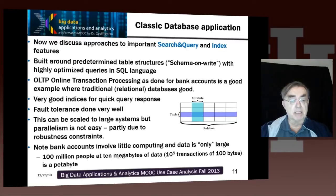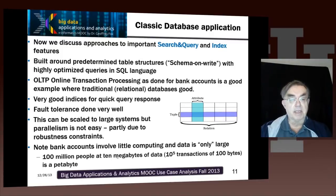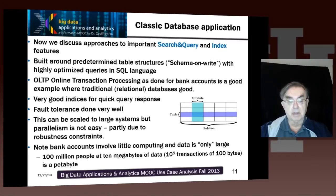Traditional databases can scale, but they can't scale to the size that NoSQL can. These optimizations and fault tolerance algorithms do not have scalable parallelism. Looking at bank accounts as an example, the data size could be up to a petabyte — estimated from around 10^5 transactions each of 100 bytes, stored over many years, with around 100 million people. That gets you to a petabyte.